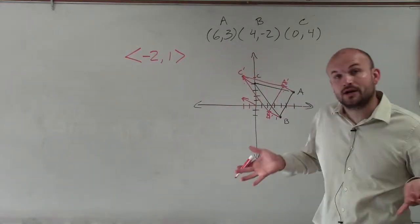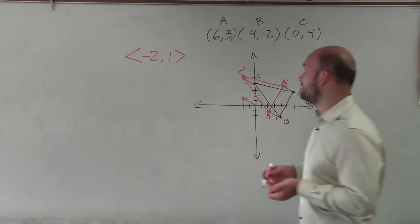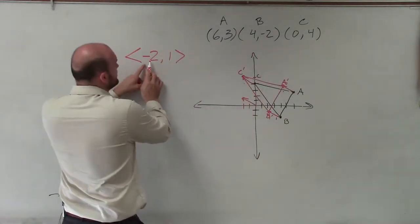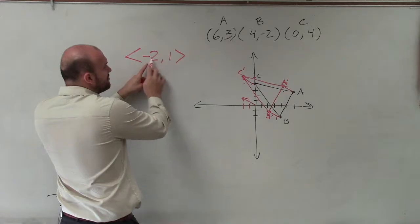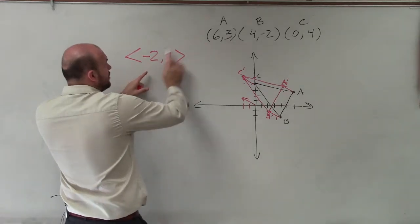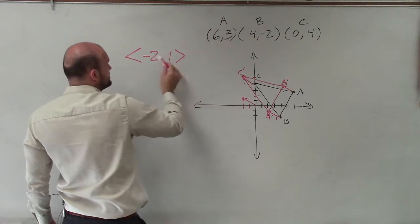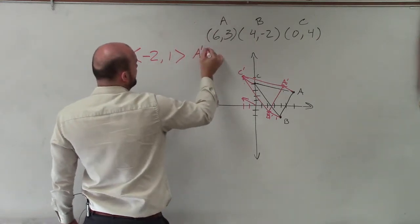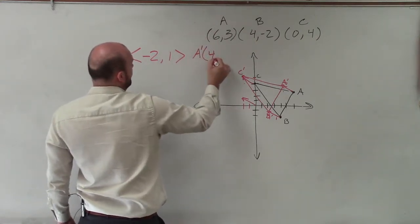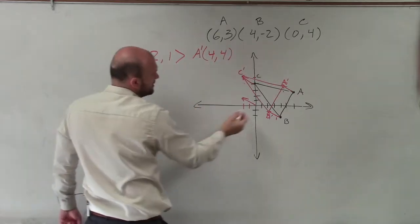A lot of times, though, we also want to know what are the new coordinates of our new image. So what I'm simply going to do is apply the operation of my transformation vector. So simply just add your vector to your points. So 6 plus negative 2, so A prime. 6 plus negative 2 is 4 comma 4.